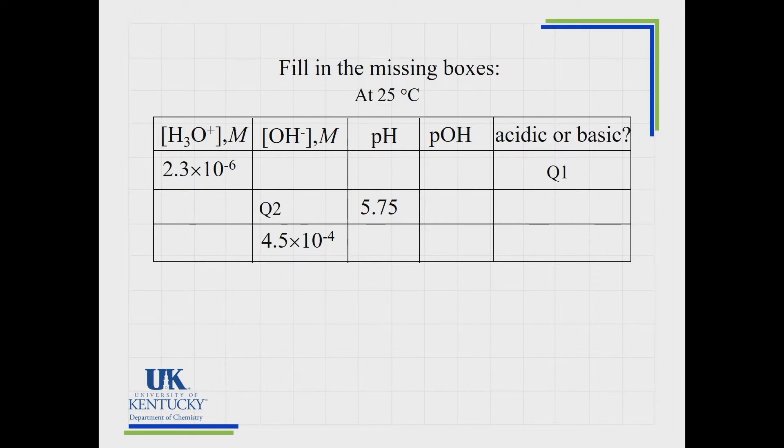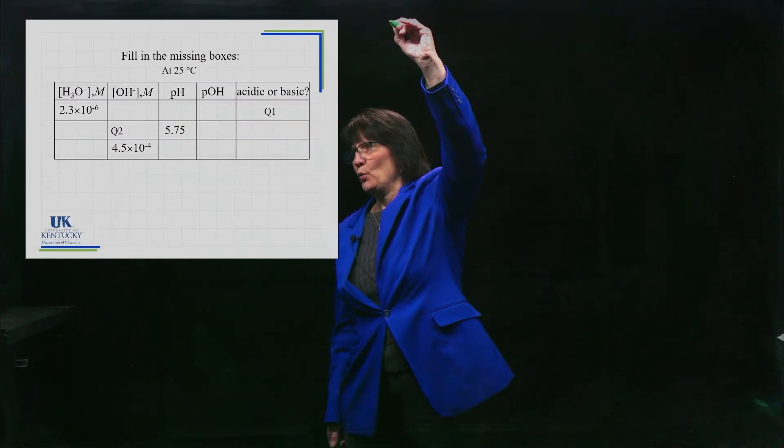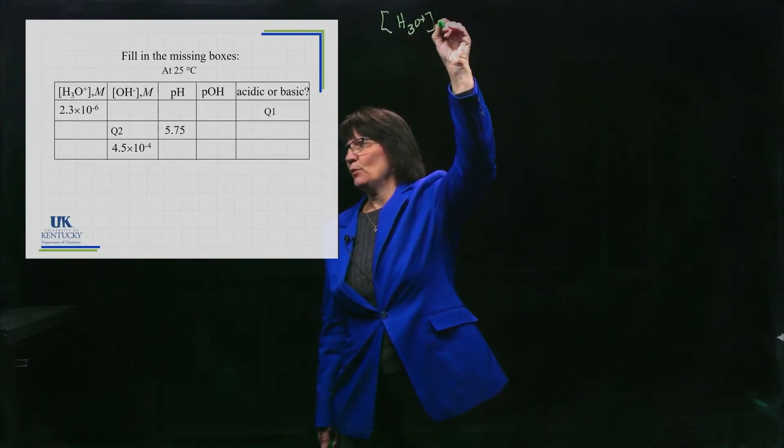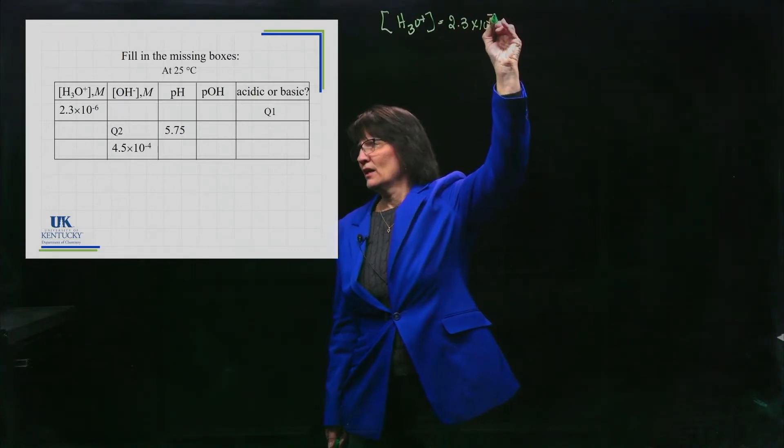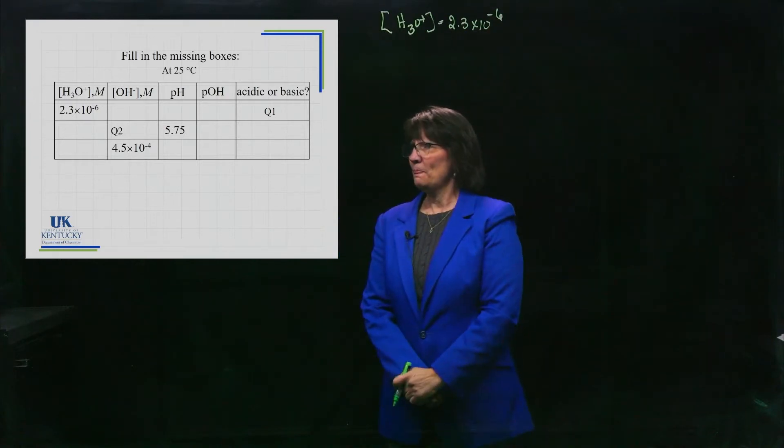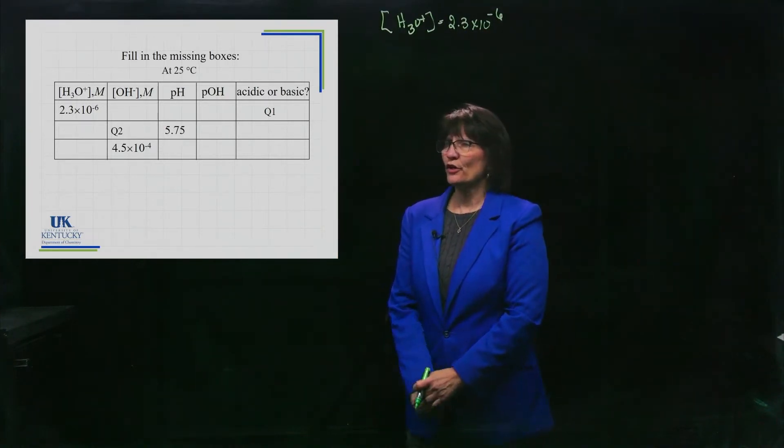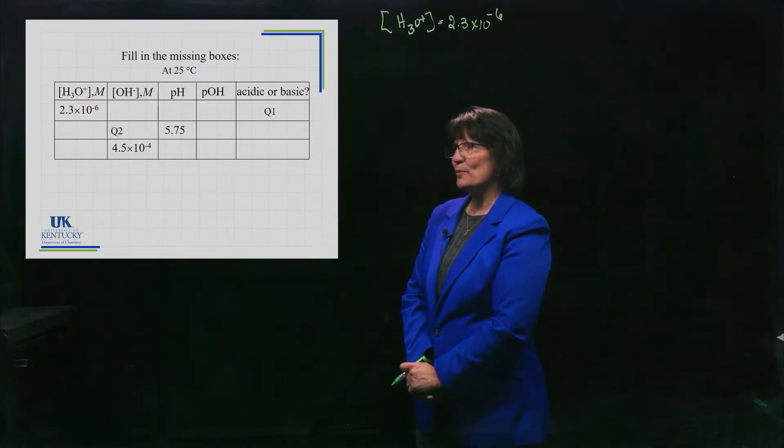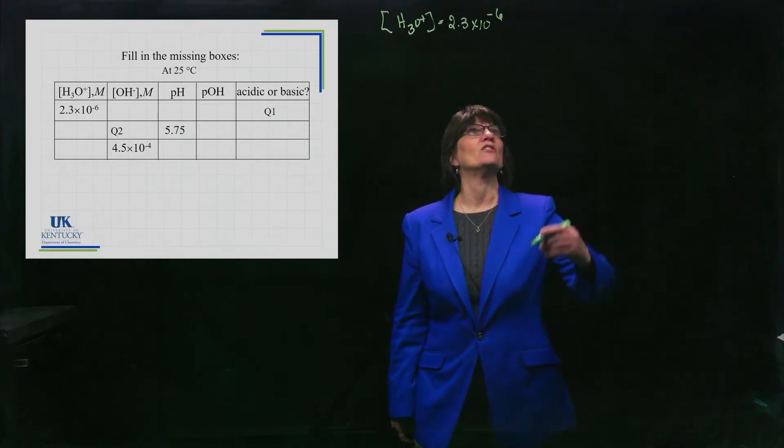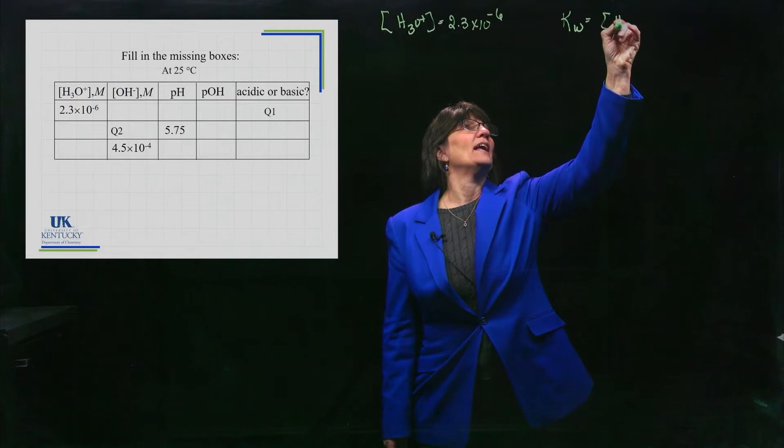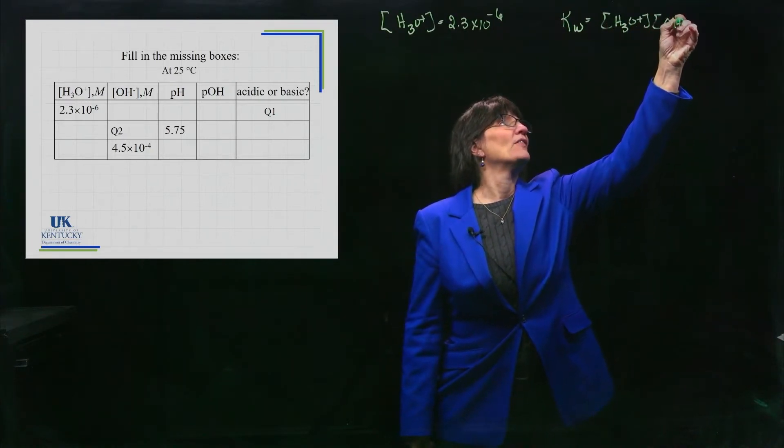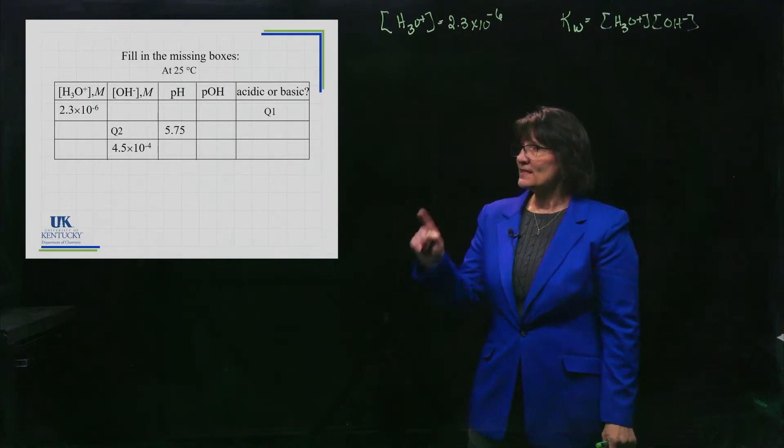Now we're going to practice going between those four components. We've got a table here. We're just going to start off and practice filling some in. Let's go to the first empty box in the top row there. That is to calculate the OH minus concentration when we know that the H3O+ concentration is equal to 2.3 times 10 to the minus 6. Which one do you want to go to first? I want to choose that first empty box there. Whenever I want to go between H3O+ and OH minus, I will pull out this equation. KW is H3O+ times OH minus.